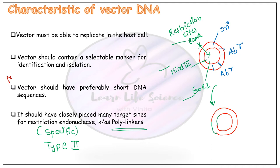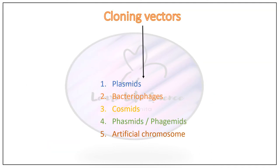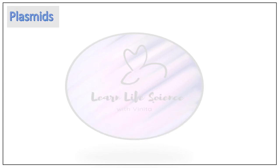So those are the four important points regarding vector DNA. Now we will start studying the first type of cloning vector, which is the plasmid. In further video lectures I will discuss bacteriophages, cosmids, phasmids, and artificial chromosomes, but for now we will start with plasmids.